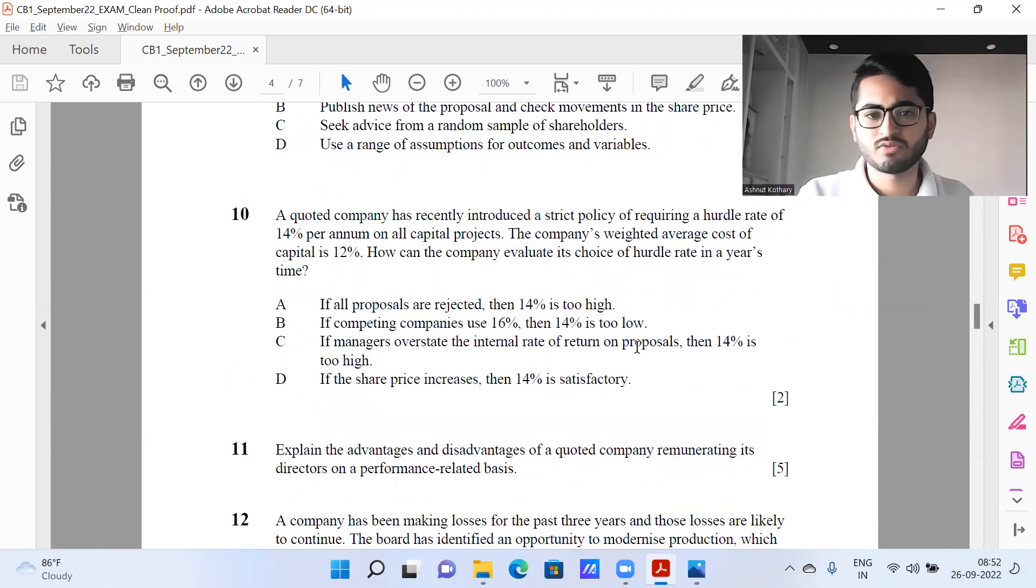And question number 10, again, some students were slightly confused in this. My understanding is that we're using 14% for the oil projects and we're rejecting all of them. Rejecting all of them means some of the projects have an internal rate below 14%. They might have 14.5, 13, 12, 10, anything. So this 14% could be high. So I felt A might be the most appropriate. Alternatively, C as well, if managers overstate the internal rate of return on proposals and 14% is a bit too high. It could be that if all projects are being rejected, so the managers might have a desire or push or influence or force to overstate the IRR so that their projects are accepted. And in that case, 14% could be artificially high. So I'll stick to rather A itself.